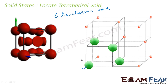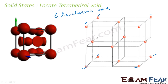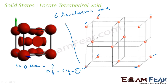You can take one corner, then another, and so on, and you get eight tetrahedral voids in total. Now, the number of atoms in this FCC unit cell is four: eight corner atoms each contributing one-eighth, plus six face atoms each contributing one-half, gives four atoms. The number of tetrahedral voids is eight — that is twice the number of atoms. This confirms that the number of tetrahedral voids is always twice the number of atoms.